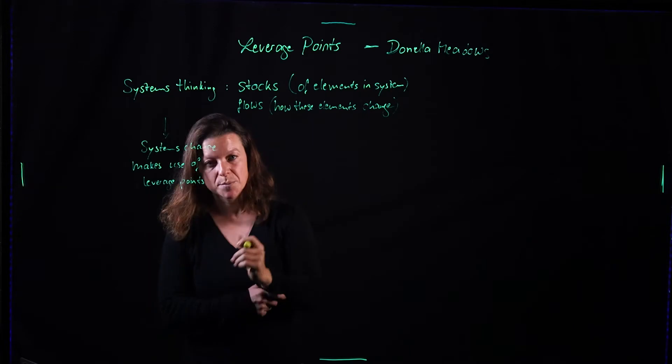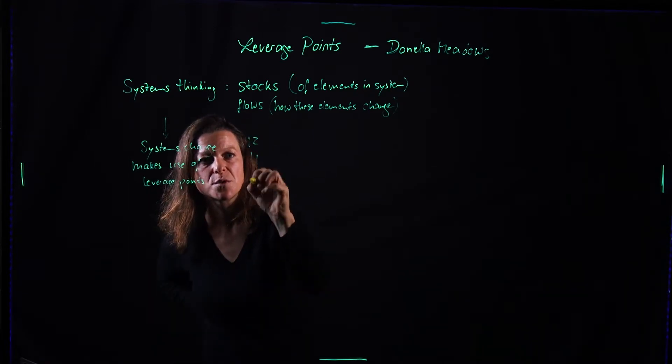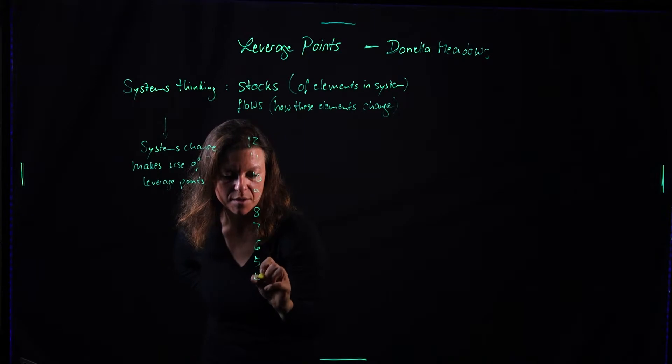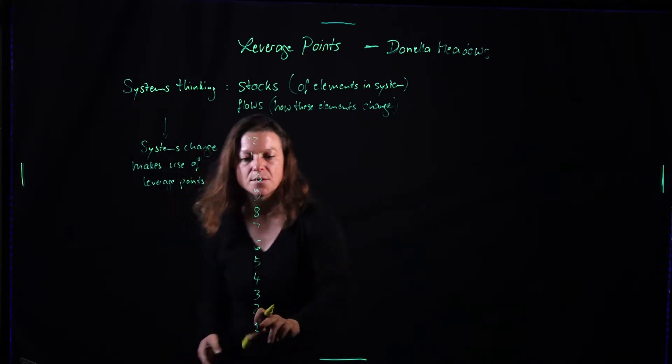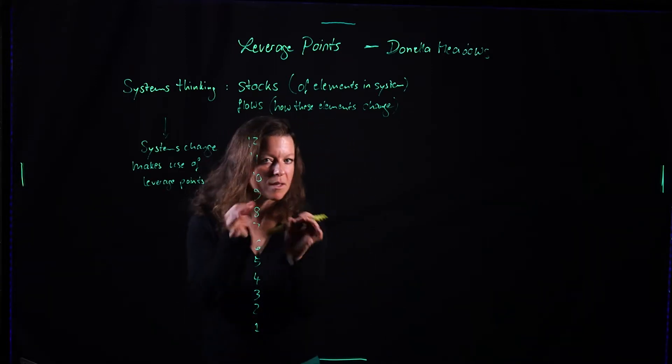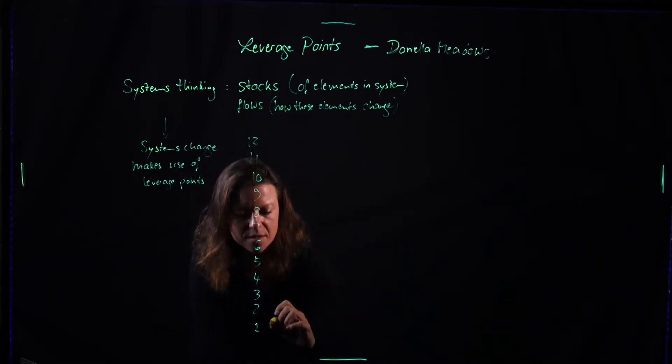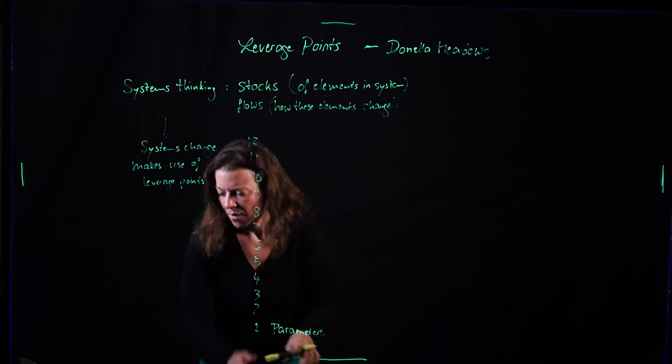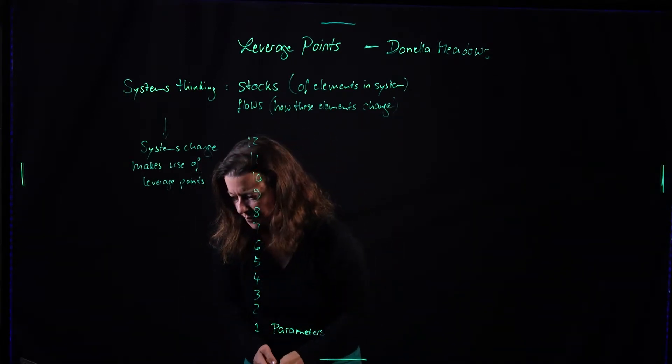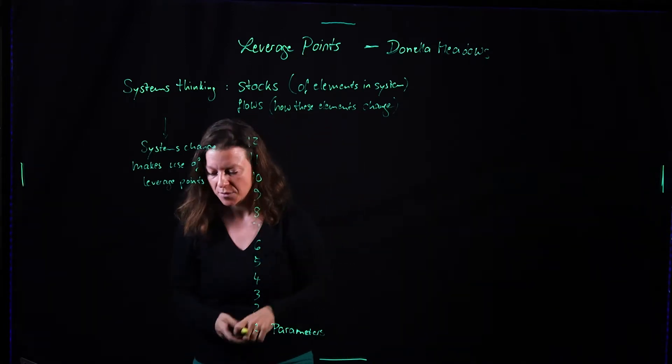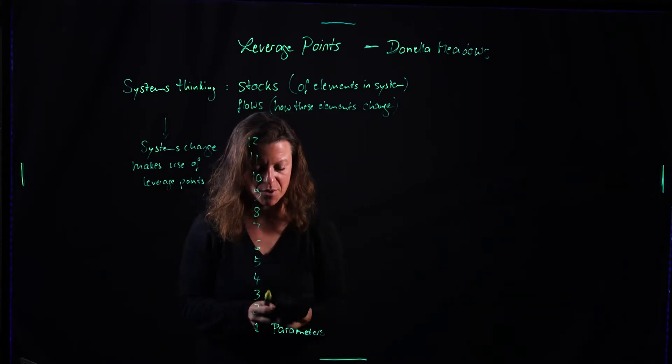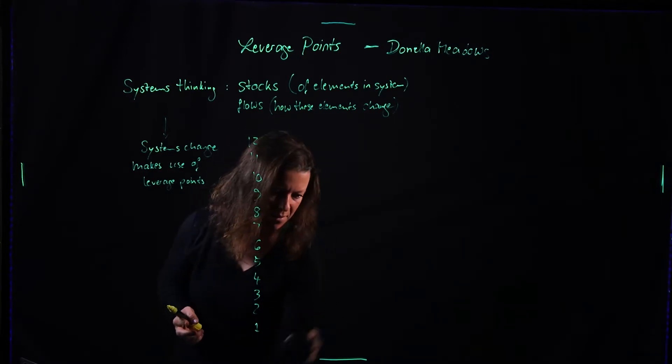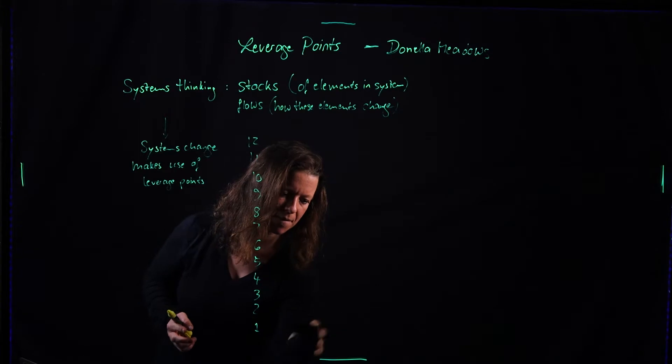There are 12 leverage points. We order them in reverse because of that impact increase I was talking about. The lowest impact, we can have a little effect with that and it's not hard to change, we can easily do it. Those are parameters, like increasing somebody's salary.